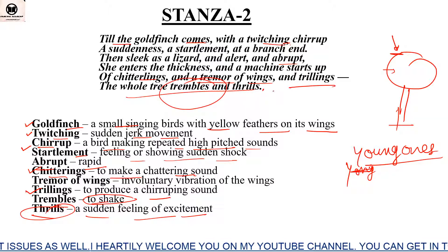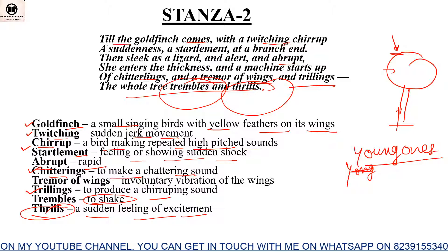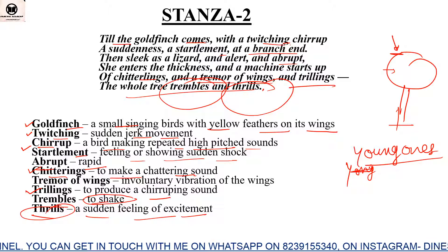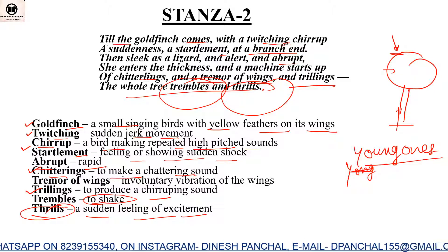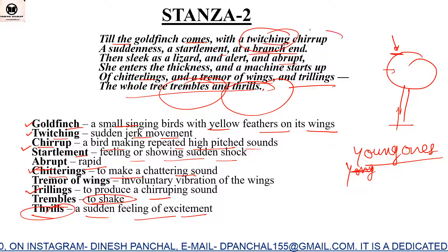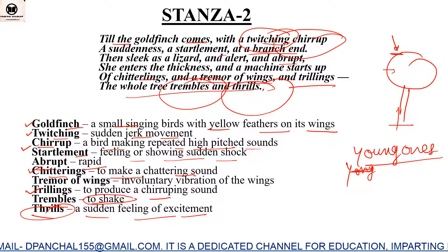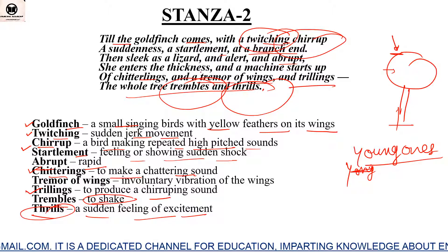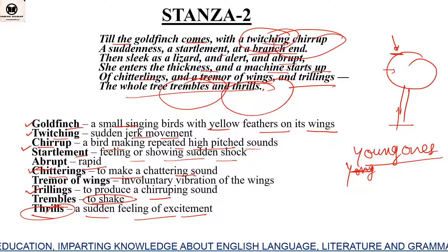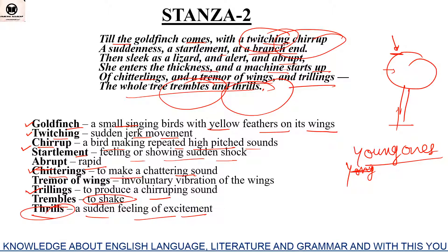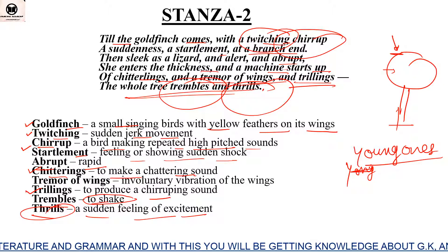'The whole tree trembles and thrills' — at that time we see that movement starts across the whole tree and an excitement becomes visible everywhere. To read it again: 'Till the goldfinch comes with a twitching chirrup, a suddenness, a startlement at a branch end.' When the bird arrives there is suddenness and shock. It comes with a twitching, jerking movement and its chirrup sound. 'Then sleek as a lizard, alert and abrupt, she enters the thickness and the machine starts up.'